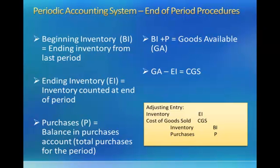Our adjusting entry at the end of the period is to debit inventory for ending inventory, debit cost of goods sold for the cost of goods sold, credit inventory for beginning inventory, and credit purchases for purchases. This journal entry will update inventory so that it is equal to the inventory that we have on hand, record the cost of goods sold for what we sold plus shrinkage, and close out our purchases account. It's important to do this adjusting entry before preparing financial statements.